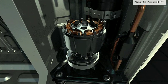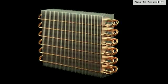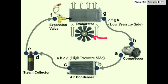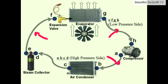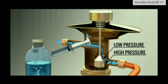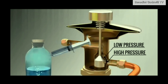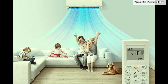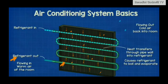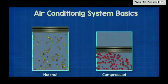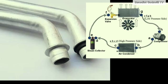Inside the indoor unit is the evaporator coil. Warm air from your room is pulled in through a fan and passed over these cold coils. Inside the coils, the refrigerant is in its low-pressure liquid form. As it absorbs heat from the air, it evaporates into a gas, pulling thermal energy out of the room — that's how the air blowing back at you gets cooler. The heat has literally been extracted.